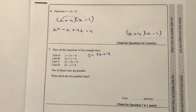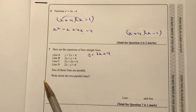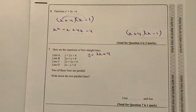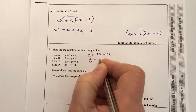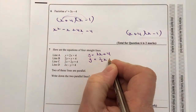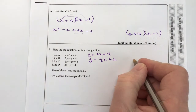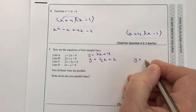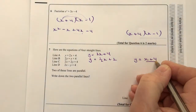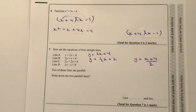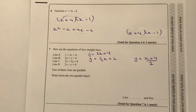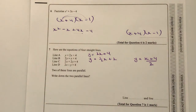The second one we need to make y the subject. We've got 2y = x + 4. If I divide through by 2, I get y = ½x + 2, which is the same as y = (x + 4) / 2. As you can see, these two are not parallel because they've got different gradients — so it's not those two.